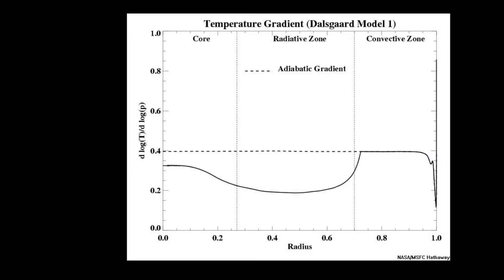The convective zone occupies the outer 30% of the sun by radius, from 0 to about 200,000 km deep, which we can see in this image from NASA.